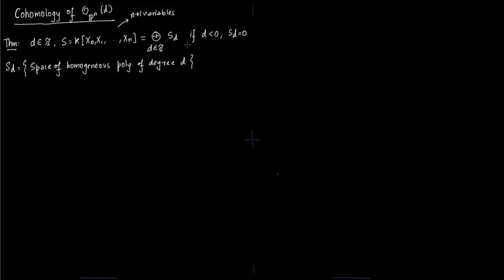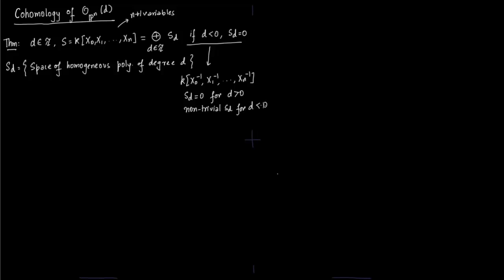This requires careful interpretation. For the ring k[x0, ..., x_{n-1}], d ≥ 0 will give SD as 0, and non-trivial spaces of homogeneous polynomials will only occur for negative grading. So this is important to keep in mind — this is the interpretation: if d is less than 0, then SD is 0.